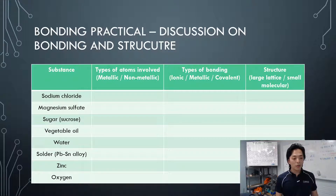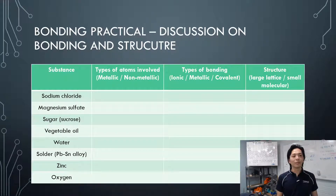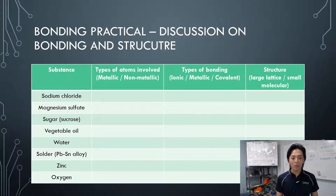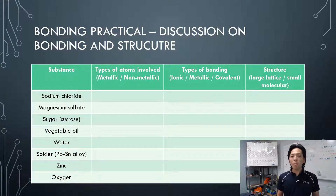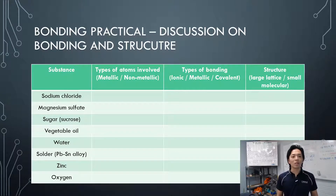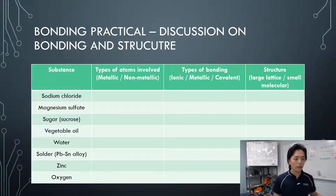How about solder? Lead and tin — it's an alloy. The atoms involved are metals only, so the type of bonding is metallic, because metal only. Structure is a metallic lattice. Remember that pattern.